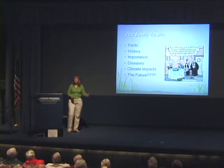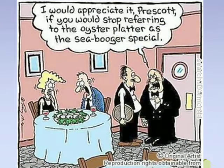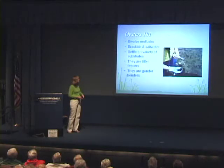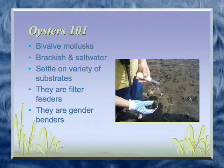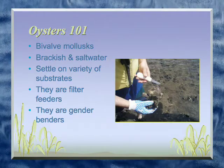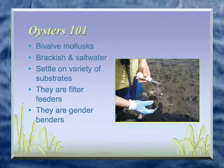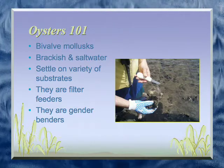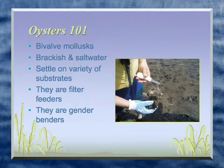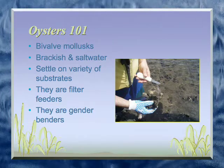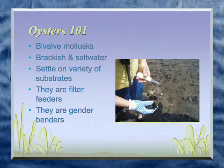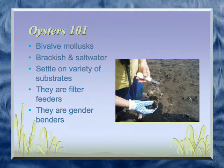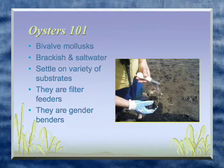Most people when they think of oysters, they just think of food. Some people like them and some people have the waiter's opinion. So what are oysters? They are bivalve mollusks. They live in a variety of habitats, from full-strength seawater to lower salinities found in estuaries. They can settle on a variety of substrates — other oyster shell, mud. They're filter feeders, which is important for the environment. And they can change sex, which makes them interesting.